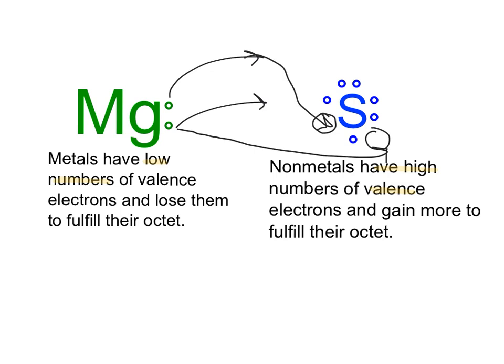When we do that, magnesium loses two valence electrons — losing two negatives means magnesium will have a +2 charge, becoming a cation. Sulfur, gaining those two electrons, gains two more negative electrons and will have a −2 charge.